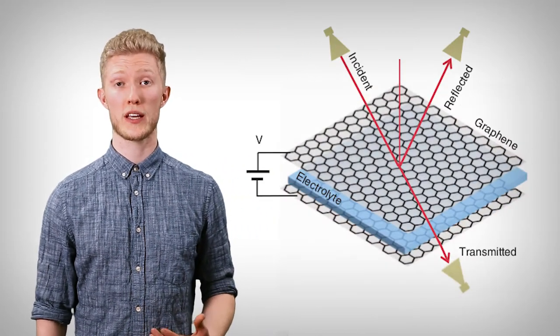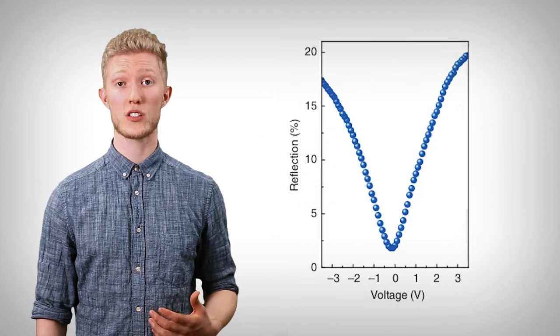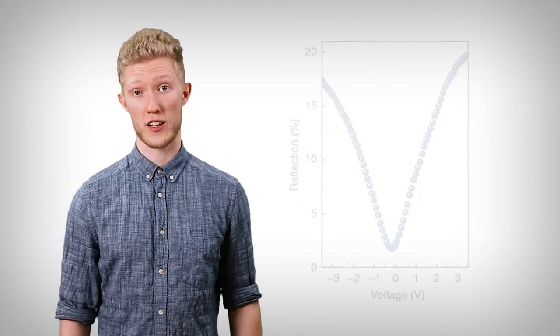Graphene presents an interesting solution to this problem, in that it is an atomically thin material. This means that it has negligible effects on the reflection of microwaves unless there are abundant free charges on it. Thus, with electrostatic doping, the application of a voltage across the material, it can be used as a switchable radar-absorbing surface. The scaling of this technology to create controllable RCS signatures will be incredibly interesting in the upcoming years.